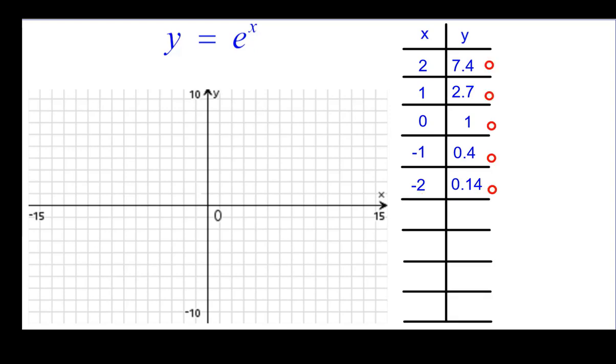So plotting those, I'll start with 0,1 just because that's a nice one to go with. That's the y-intercept. Over 1, up 2.7. Over 2, almost 7.5, 7.4. Going to the left, negative 1, almost a half, but a little less. And negative 2, about 0.14. So those five points trace out a curve and connect the points.